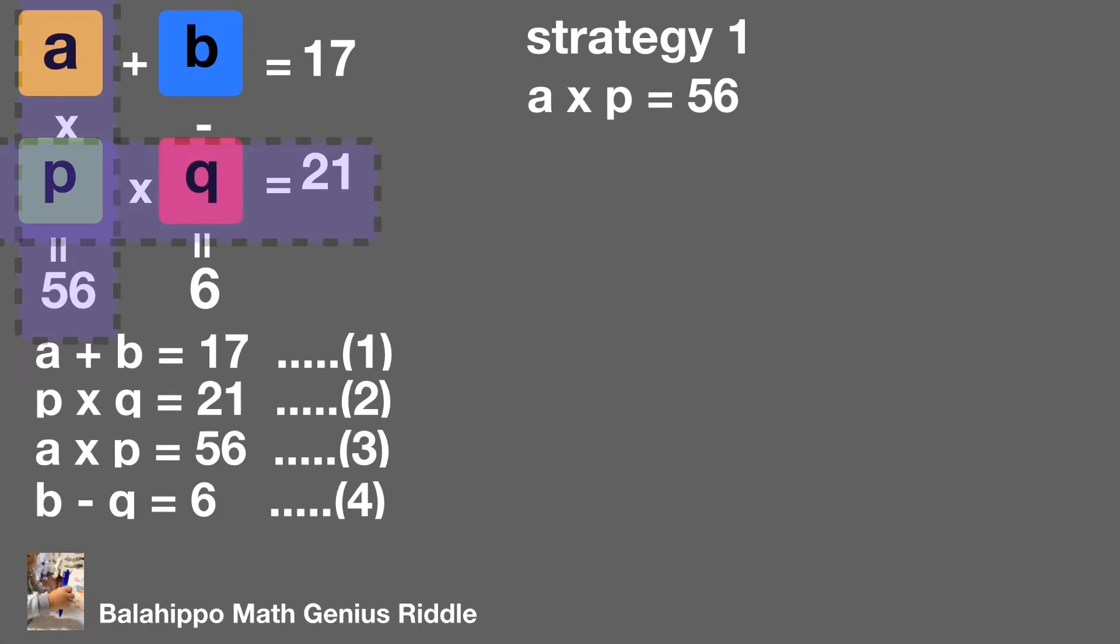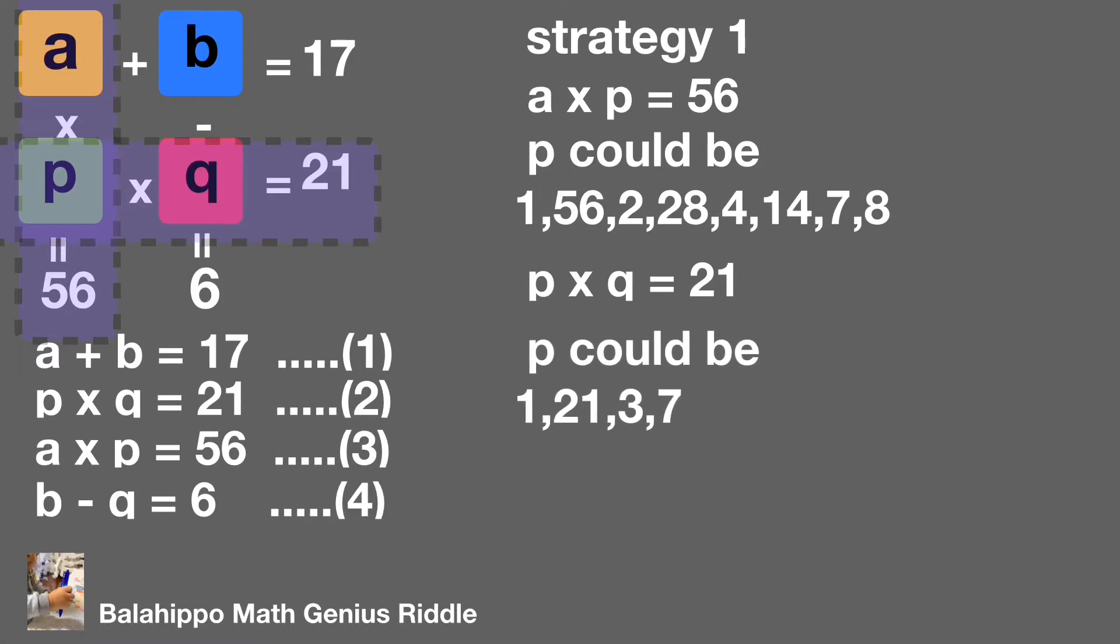P could be 1, 56, 2, 28, 4, 14, 7, 8. P times Q equals 21, so P could be 1, 21, 3, and 7. And P is less than 21. Compare these two number groups. You will easily get P is 7.